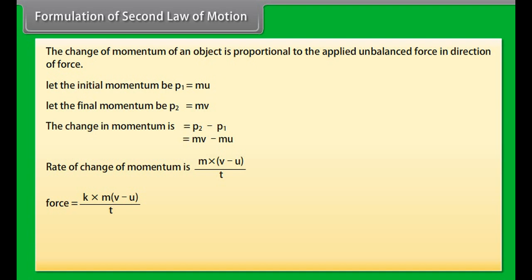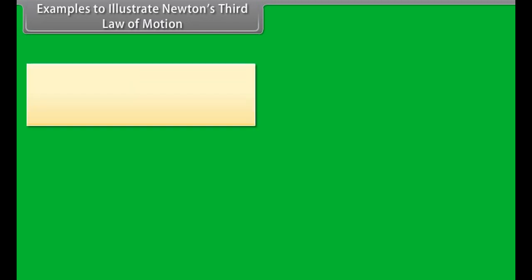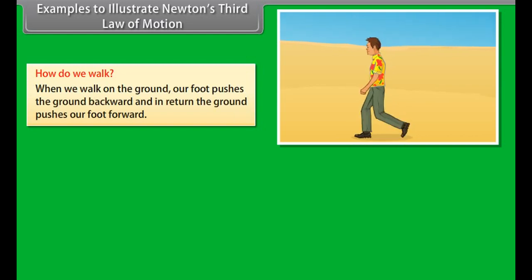Formulation of second law of motion. The change of momentum of an object is proportional to the applied unbalanced force in direction of force. Let the initial momentum be P1 equals MU. Let the final momentum be P2 which equals MV. The change in momentum is P2 minus P1 which equals MV minus MU. Rate of change of momentum is M into V minus U whole upon T.